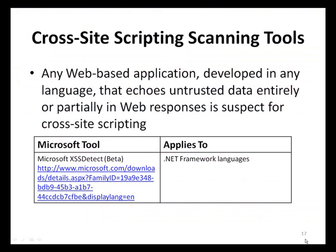In addition to safer coding practices, you should also be regularly reviewing your code for cross-site scripting vulnerabilities. Any section of web-based application code that entirely or partially echoes untrusted data in web responses is suspect. Microsoft has published a code scanning tool called XSS Detect which integrates with Visual Studio to assist developers and testers in this endeavor. This tool is designed to assist in code review and is not designed to replace the overall code review process. It is effective in identifying only certain coding patterns that can lead to cross-site scripting vulnerabilities and should be combined with expert manual code reviews and other security verification practices.